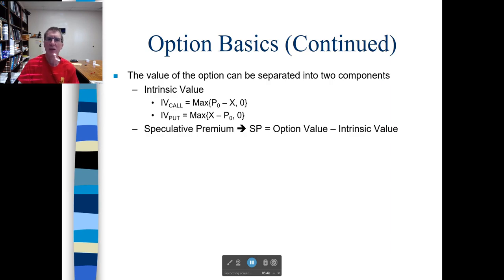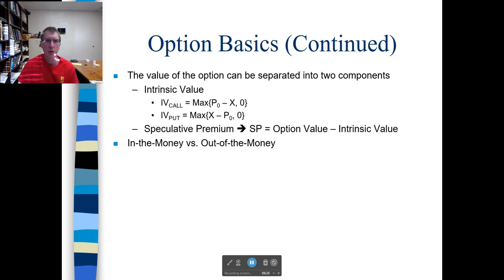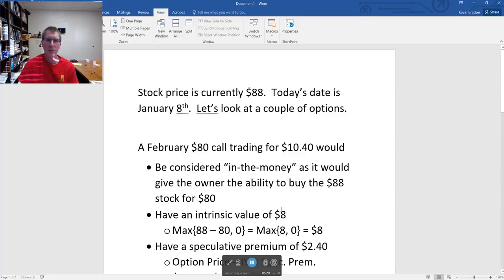The next thing we want to get into is a little bit of valuation. Here's where terminology can get a little confusing, so the sooner you get comfortable with this, the better. The value of an option can be separated into two components: intrinsic value — kind of what the option would be worth if it expired right now — and a speculative premium, which is how much extra we're paying for the potential of that option. Let me walk through an example. Let's assume we've got a stock price that's currently $88 per share, and today's date is January 8th.